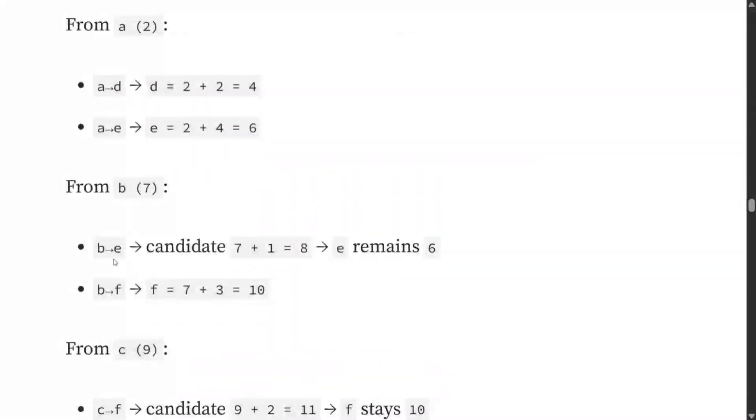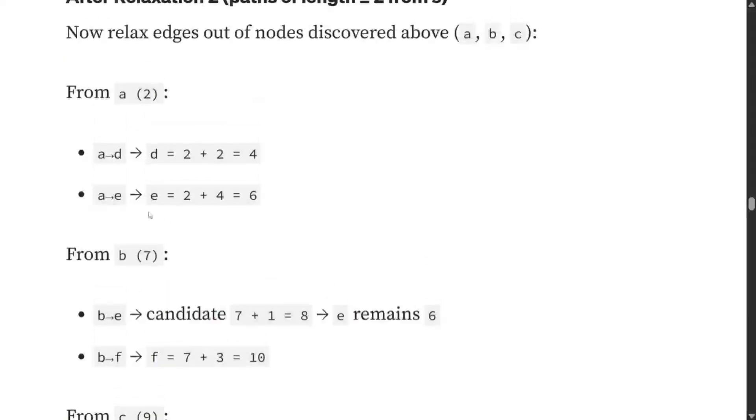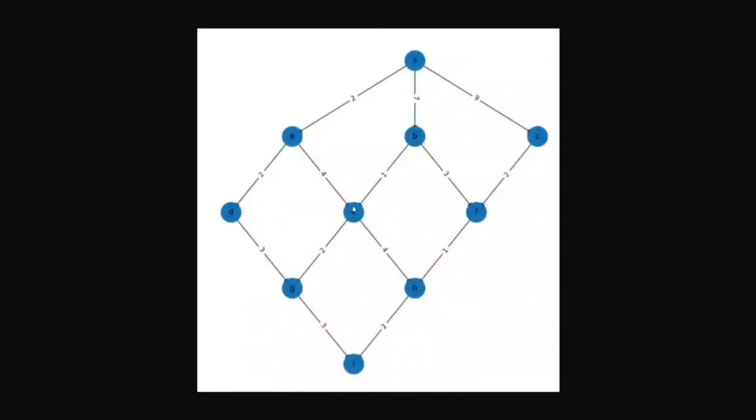From A to D: 2 plus 2 equals 4. A to E: 2 plus 4 equals 6. B to E: 7 plus 1 equals 8, but E remains 6 because the earlier update from A is less than from B. This is applicable to D, E, and F also.